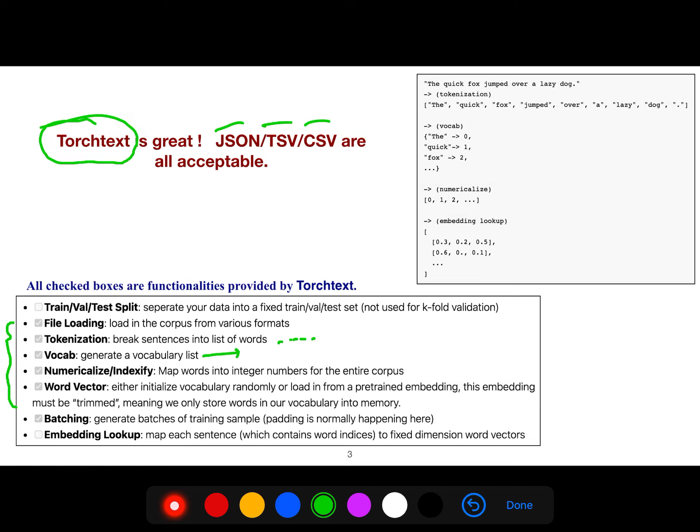Then you generate the vocabulary list. For example, you give a GloVe in order to see what the word vector looks like. You assign a unique integer to each word. Finally it's batching, padding, packing and those things, but make sure that it doesn't split your training data so you should do it yourself. It is not embedding lookup, so you map each sentence to fixed dimension word vector. TorchText doesn't do that.